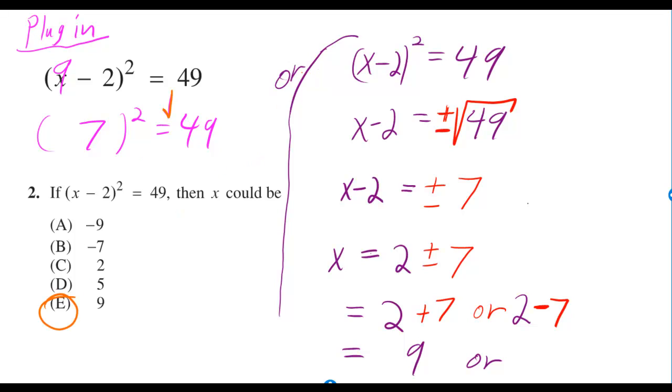If you didn't have multiple choice, you could have done it this way. x minus 2 squared is equal to 49, so x minus 2 is equal to the square root of 49, but you also got to put plus or minus.